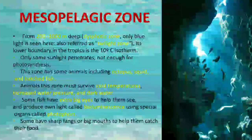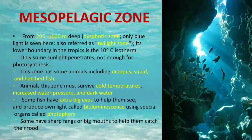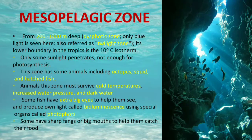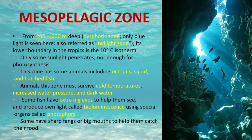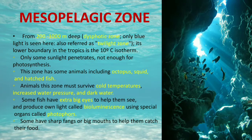The next zone is the mesopelagic zone, from 200 to 1000 meters deep. It is also called the dysphotic zone or twilight zone, because only blue light is seen here. The epipelagic zone was called the euphotic or photic zone, but the mesopelagic zone is the dysphotic zone.